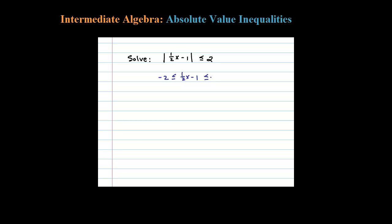Then the distance will be less than 2. Once you have it set up as a compound inequality, you can just solve like normal. So here I would add 1, so negative 1 is less than or equal to 1/2 X which is less than or equal to 3.